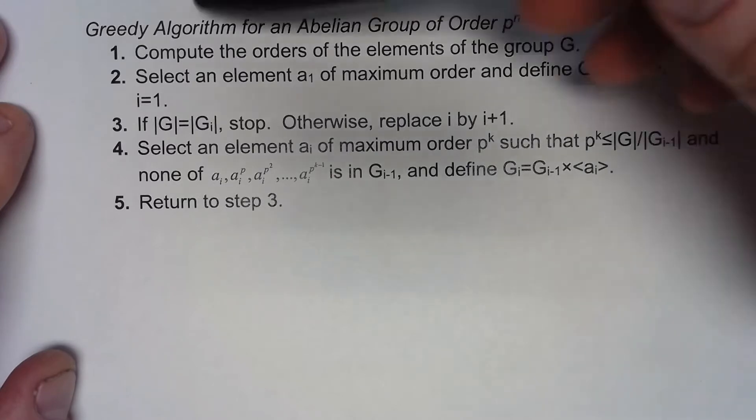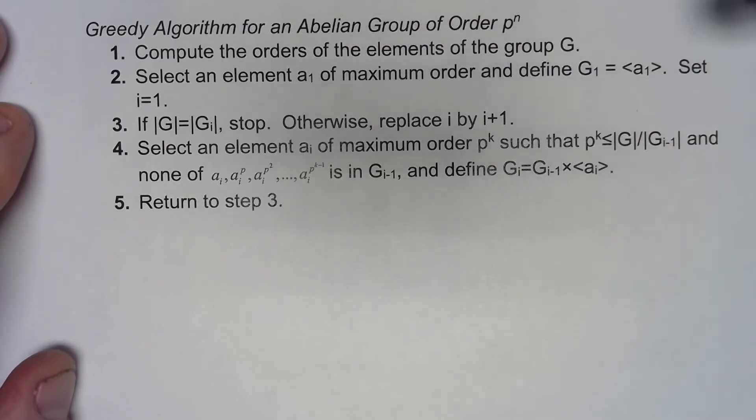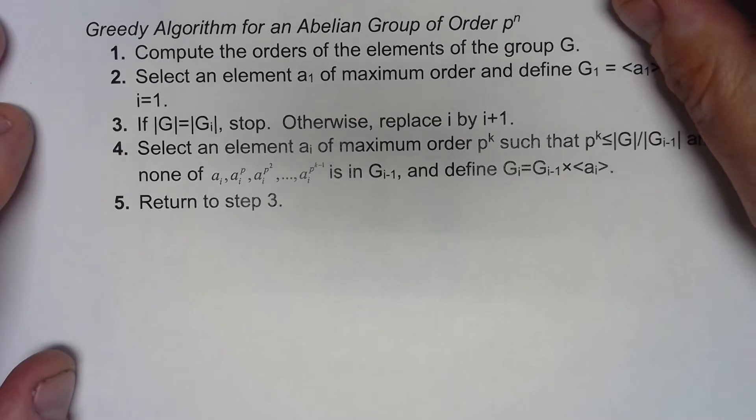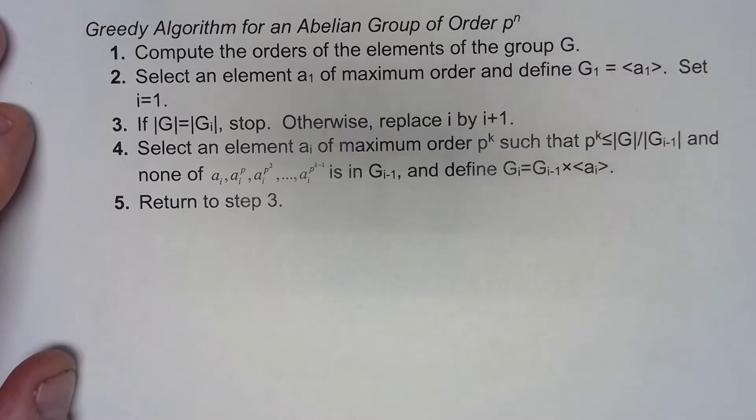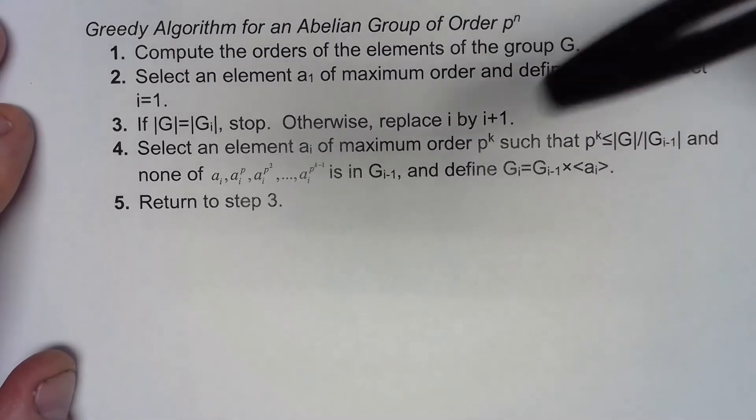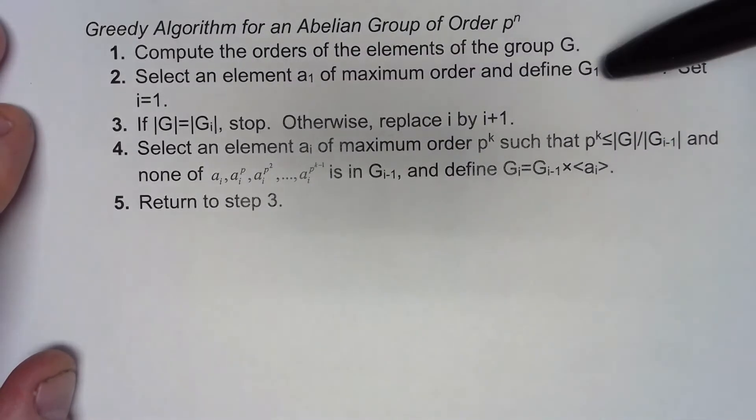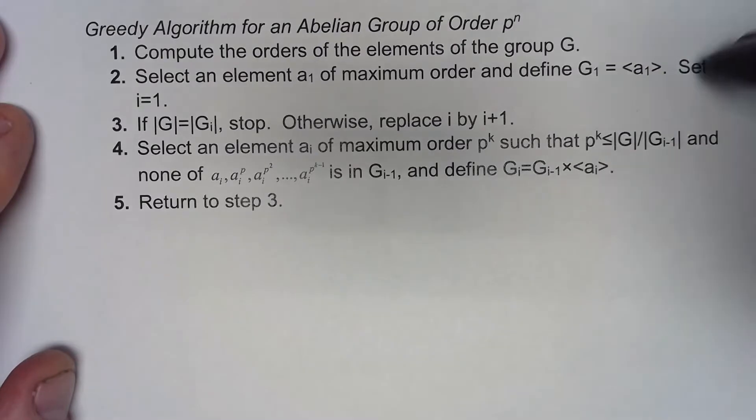So we start out, we compute the orders for all the elements of the group G and I'm going to be honest this can be tedious, but once we have those orders we just go ahead and start by picking an element of the maximum order and then start with a cyclic subgroup generated by that element.